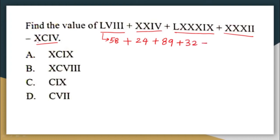Next we have XC — C is 100 and with X (10) before it, that makes 90 — plus 4 gives 94. So the value of the expression is 58 + 24 + 89 + 32 − 94 = 109.